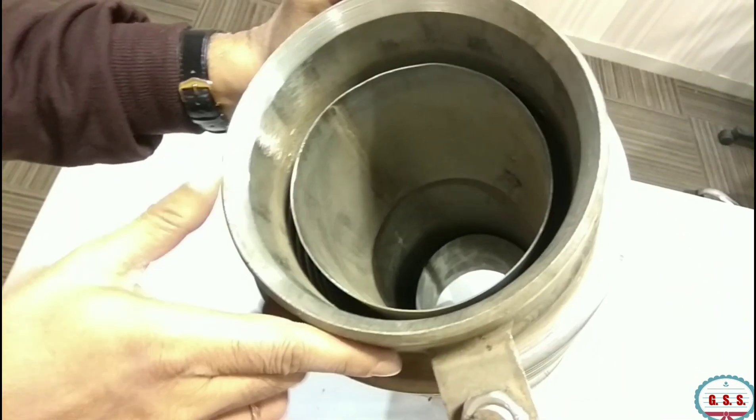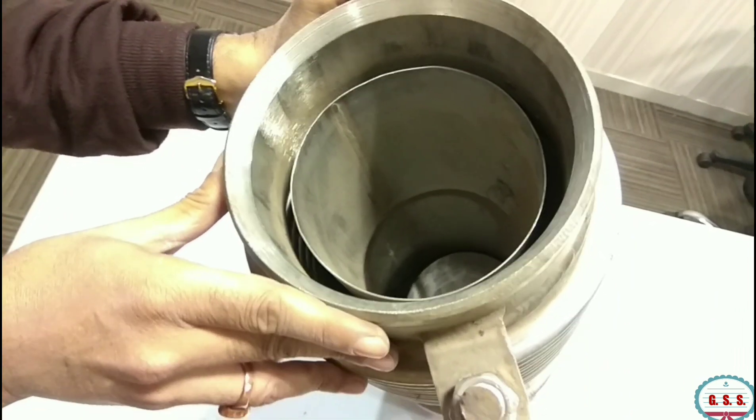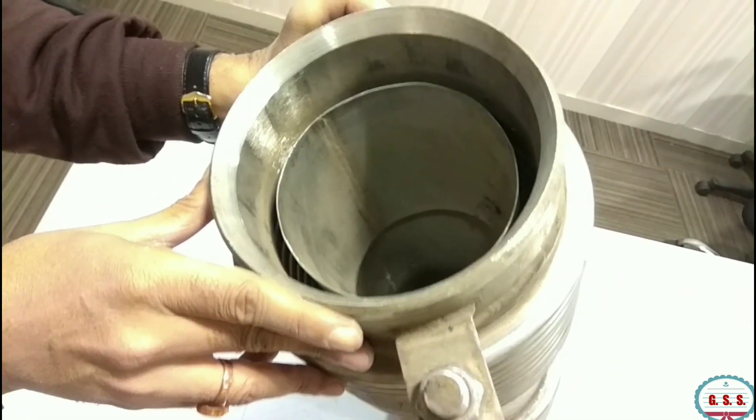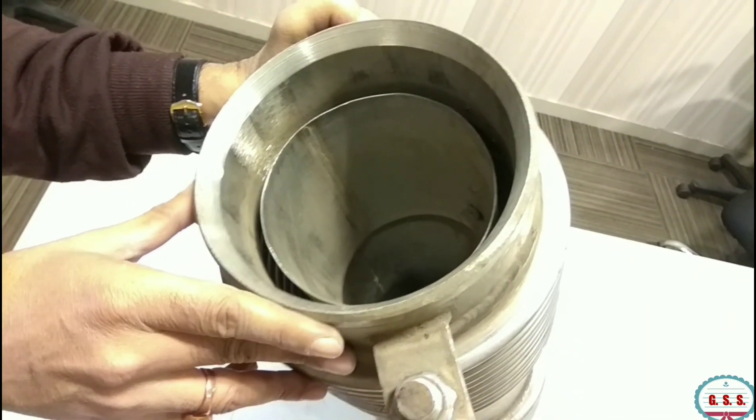Now one reason for bellows failure is if the equipment is having fluctuating flow—say any pump or compressor is having pressure fluctuation—that means back flow is there.